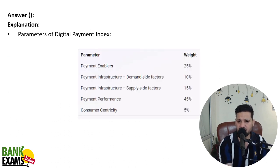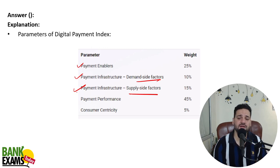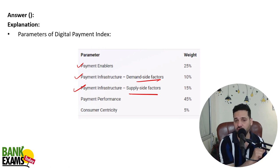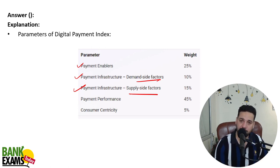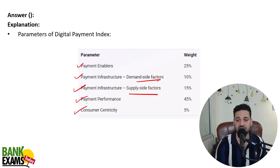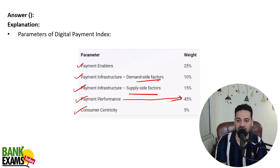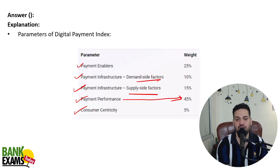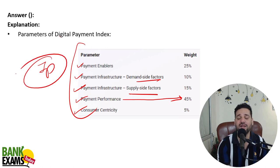The five parameters are: payment enablers, payment infrastructure, demand side factors, supply side factors, and consumer centricity. Demand side means people like you and me who are going to make the payment — whether we have the proper mobile devices and have installed the apps for UPI and everything. Supply side refers to whether they have the proper infrastructure. Payment performance — including the payment failure rate — has the highest weightage in the Digital Payment Index. Please remember that; it can be asked in the exam.